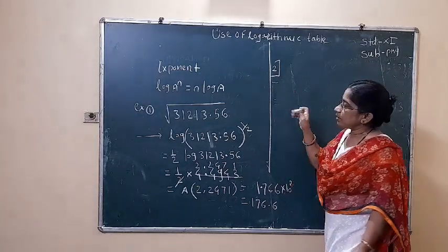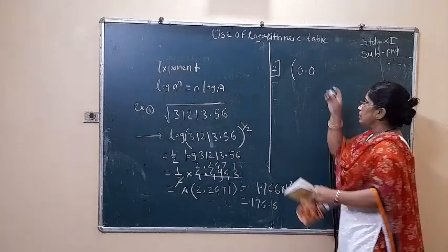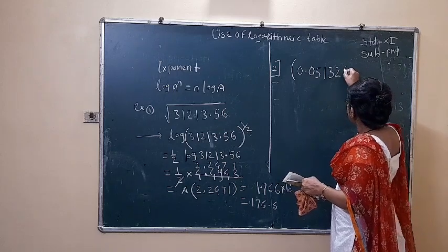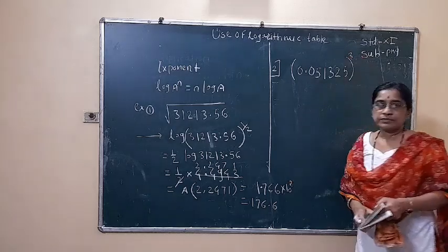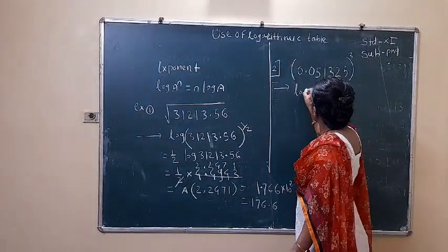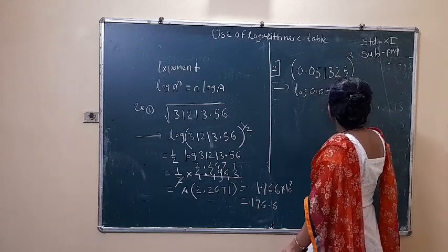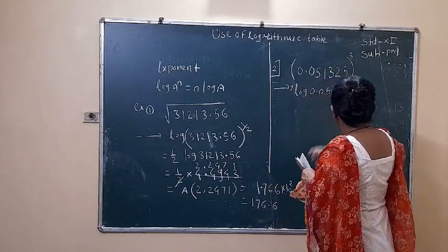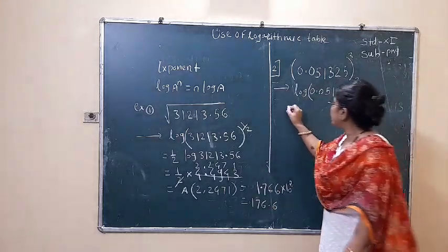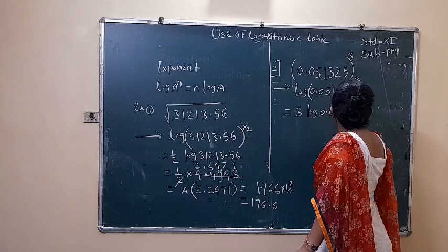Second example: zero point zero five one three two five, raised to three. The index is three. By applying this rule, we get three into log of zero point zero five one three two five.